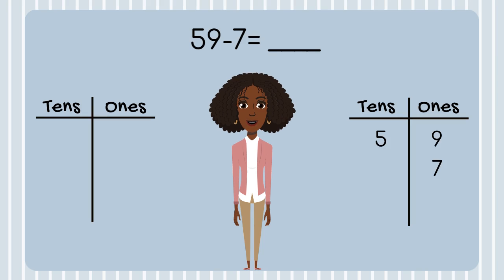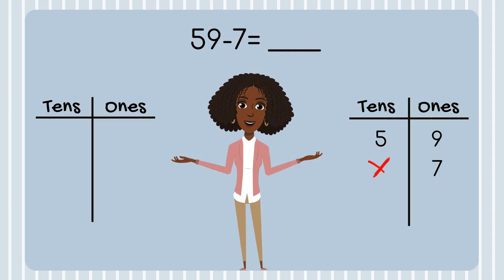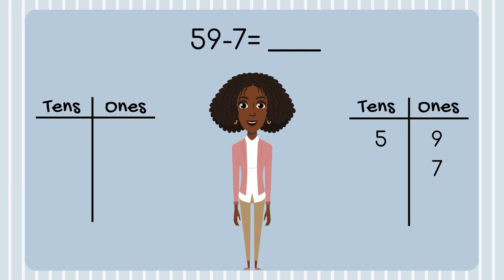I notice that the number 7 only has one digit. I want to make sure I place this number in the correct place value spot. I can't place it in the tens place, because that would mean I have 7 tens and 0 ones, which would make the number 70. And my equation is not 59 minus 70. So I'll place my number 7 in the ones place. 59 is my total, and I need to subtract 7, so I'll model the number 59 with place value blocks.